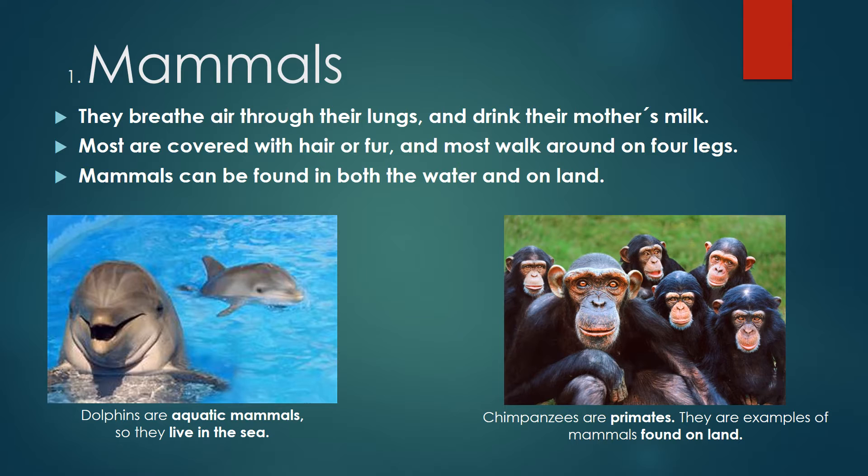Dolphins are aquatic mammals, so they live in the sea. Chimpanzees are primates and are examples of mammals found on land.